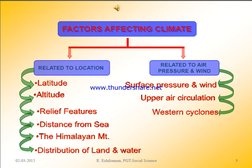The factors affecting India's climate are related to location — latitude, altitude, relief features, distance from the sea, the Himalayan mountains, and distribution of land and water — and to air pressure and wind, including surface winds, upper air circulation, and western cyclones. These factors will be discussed in the next video.